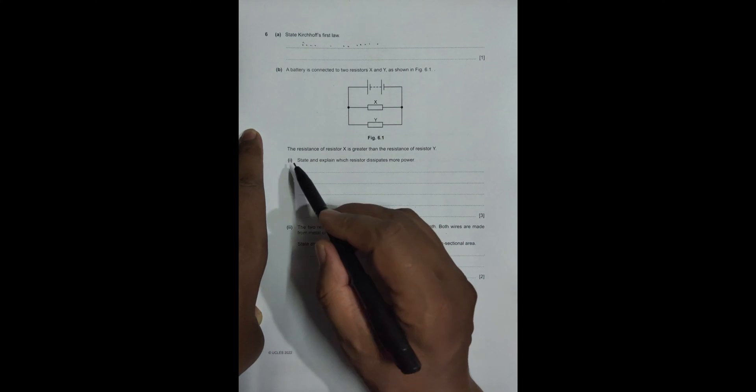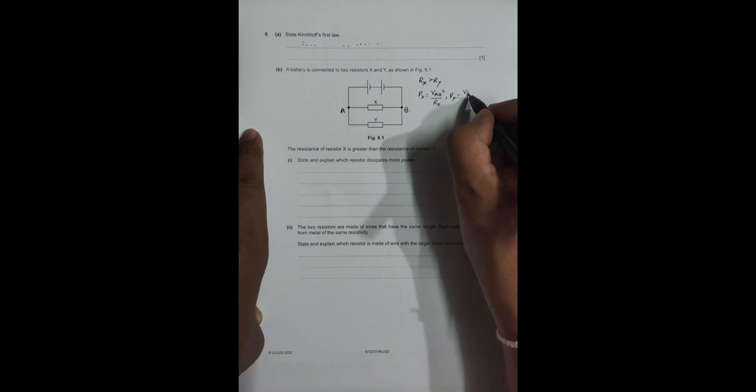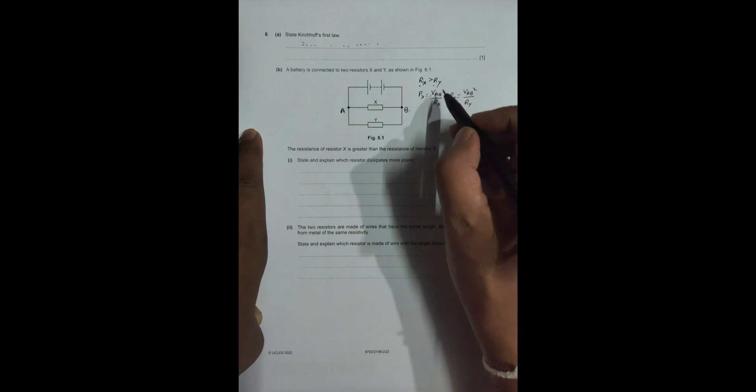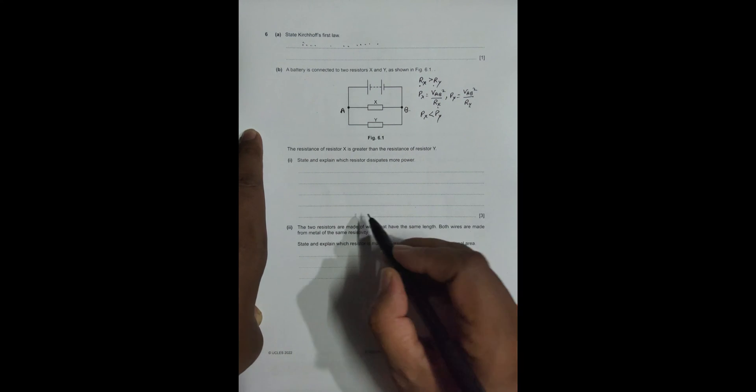Part (i) says a battery is connected to two resistors X and Y as shown in figure 6.1. The resistance of resistor X is greater than the resistance of resistor Y, so RX > RY. We need to explain which resistor dissipates more power. For that, Power X = VAB²/RX, and Power Y = VAB²/RY. Since RX is more than RY, and RX is in the denominator, we must have Power X is less than Power Y.